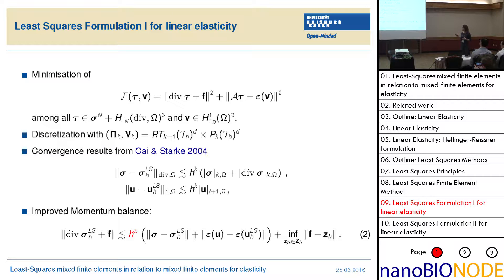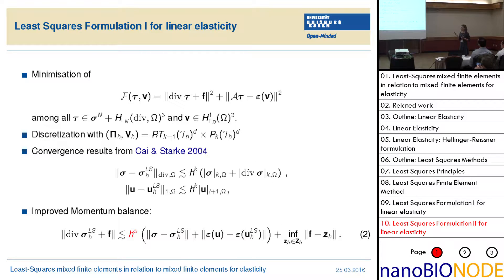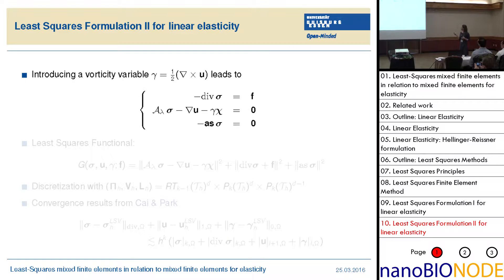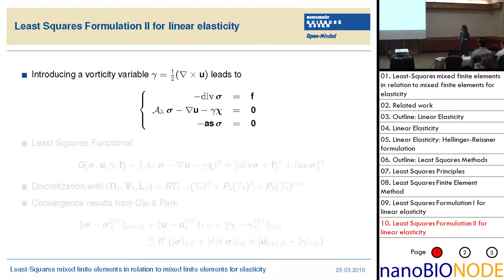I wanted to give you the idea of the proof, but I will do that for the second formulation because it works in the same way. In that second formulation — the new one for linear elasticity — you introduce some vorticity variable. The problem with the previous formulation is that you have no symmetric condition, so symmetry will not be improved — it will automatically converge but not improve. In this new one you introduce a vorticity variable such that you have a third condition: the stress tensor has to be symmetric.